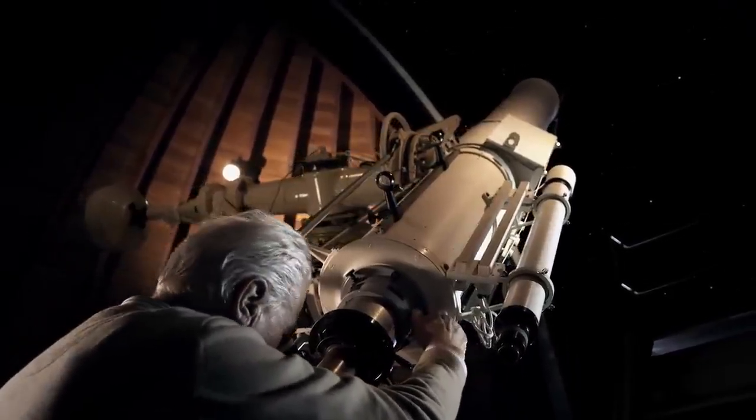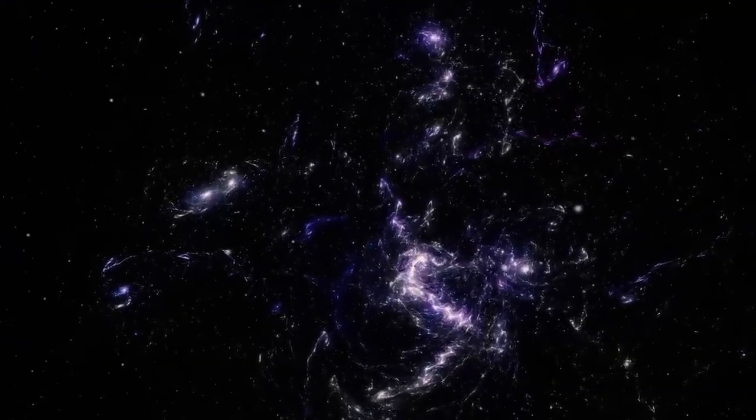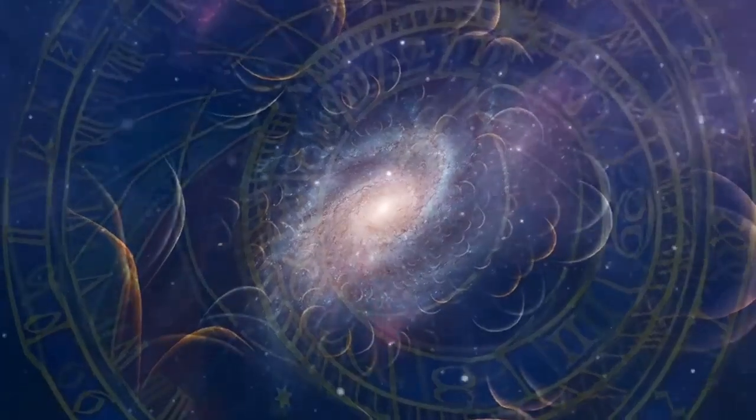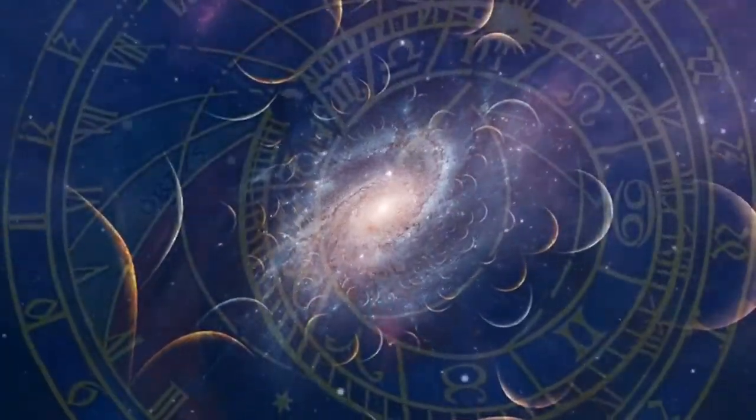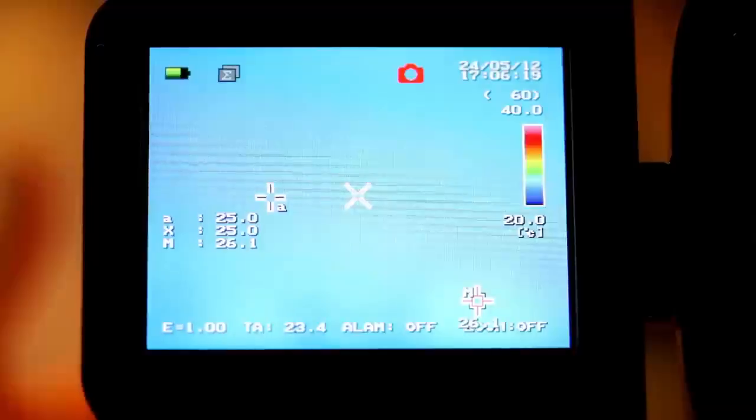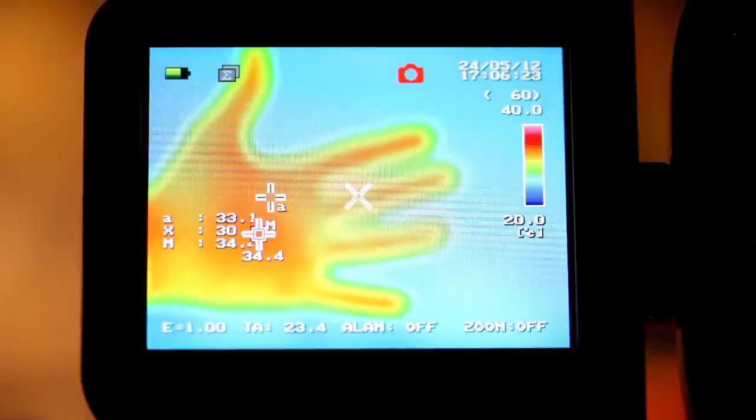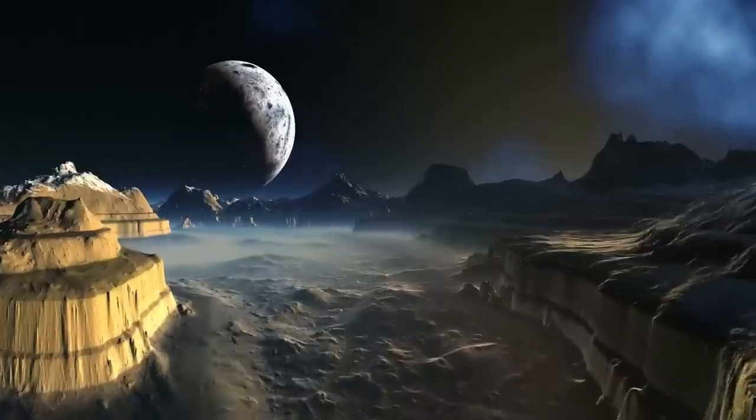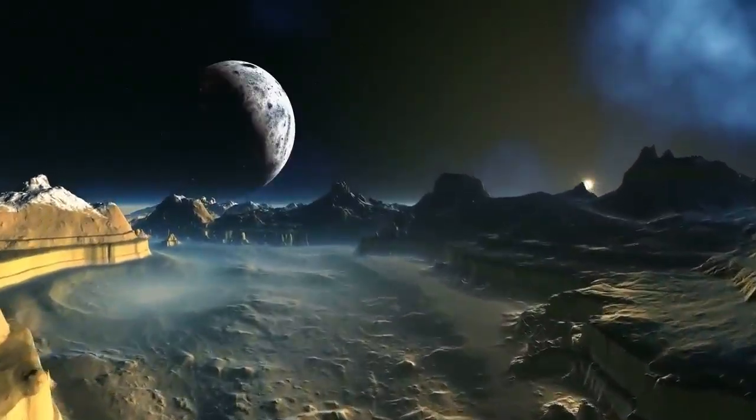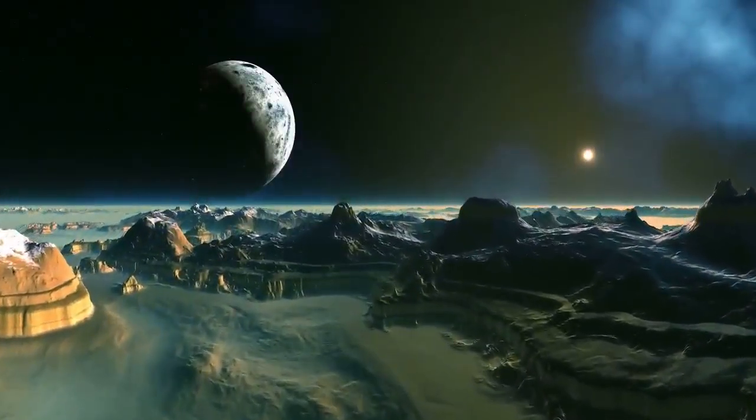However, due to the time delay in its light reaching us, researchers cannot be certain whether Betelgeuse is already in the final stages before a supernova or if it still has tens of thousands of years left in its life cycle. This paradox highlights the complexity of stellar evolution studies and reinforces the idea that when we gaze into the cosmos, we are always looking into the past. This time paradox is an important consideration when monitoring Betelgeuse.